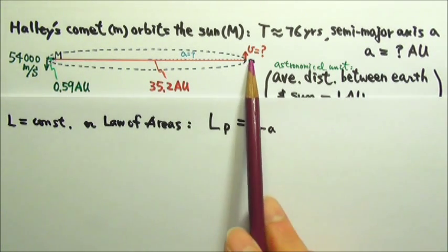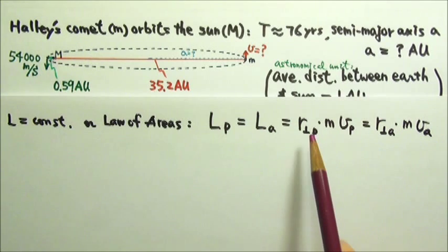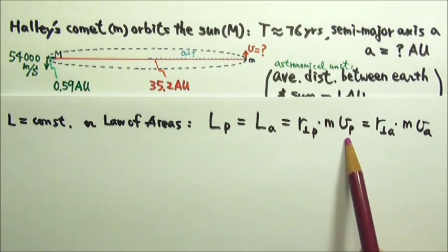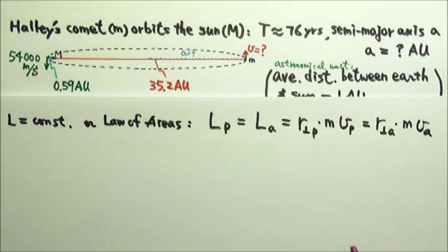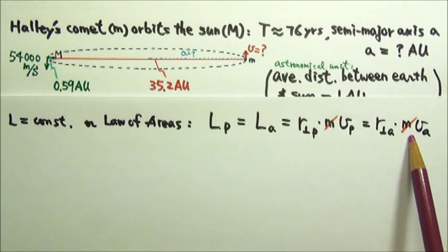We can treat the comet as a point mass. So we can use the angular momentum for point mass, the perpendicular r times mv. The mass is the same, so we can cancel the m.